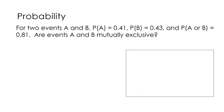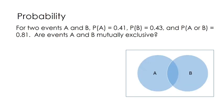Here's our first question. For two events A and B, probability of A equals 0.41, probability of B equals 0.43, and the probability of A or B is 0.81. Are these events mutually exclusive? Let's get our Venn diagram going and problem solve. I would sit here and think: I'm not sure how to tell if something's mutually exclusive, but what can we figure out about this situation?